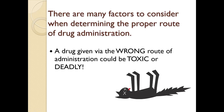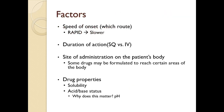There are a lot of factors to consider when determining the proper route of drug administration. If a drug is given by the wrong route, it could be toxic or deadly. One factor is speed of onset — which route is more rapid, which is slower, and do we want a more rapid effect or a slower effect? Also, how long do we want the drug to act in the body — its duration of action. Sub-Q duration of action can be longer than IV.